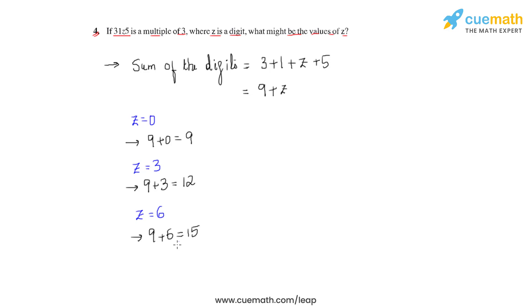So here the next value of z would be 9, because of which the sum would result in 9 plus 9 equals 18.